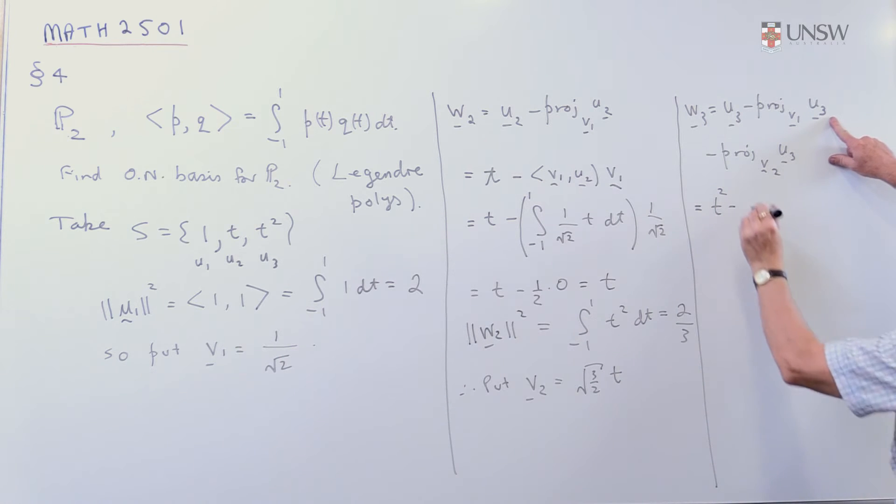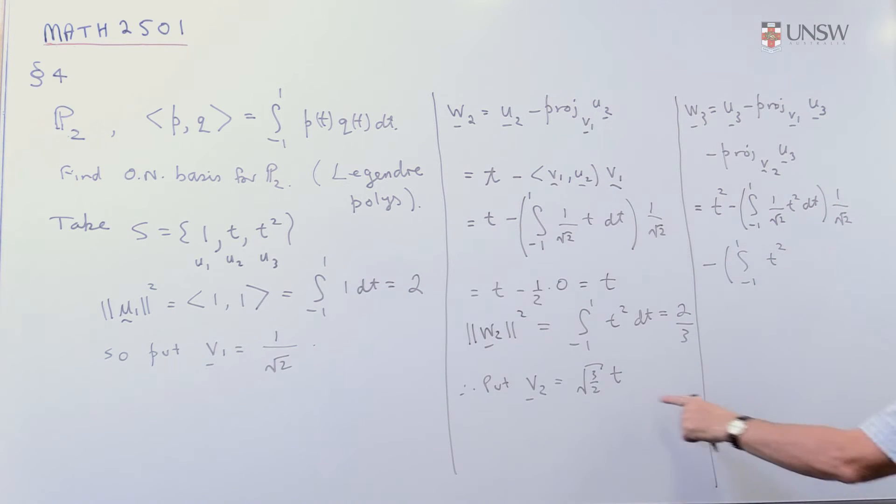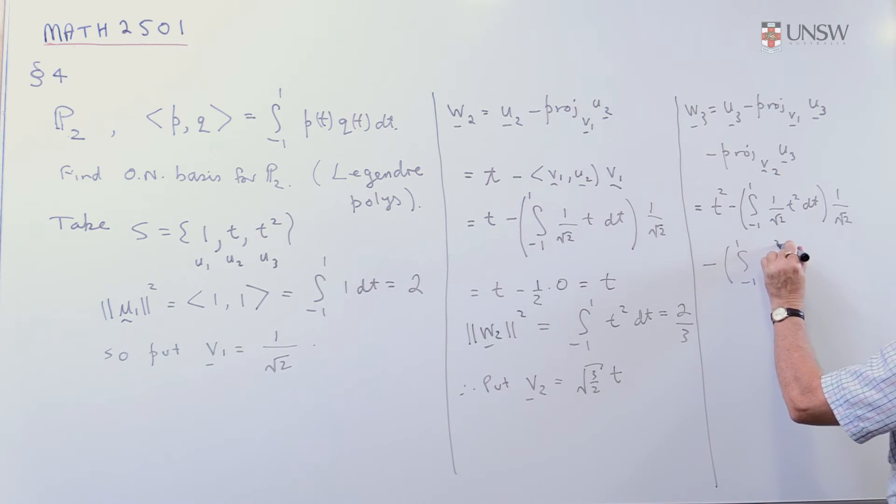minus, I'm going to take the integral of minus one to one. I'm going to multiply this one, which is one on root two, times T squared. DT, and then that one gets multiplied by V1, which is one on root two. Then I have to subtract off the integral, minus one to one, I do U3, which was T squared, times V2, which had another T, so that's T cubed, times root three on two, DT, multiplied by V2, which was the square root of three on two T.